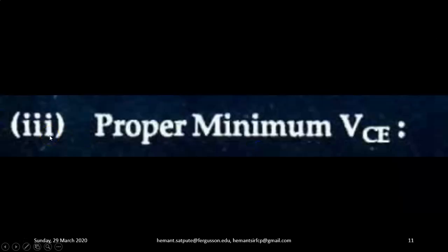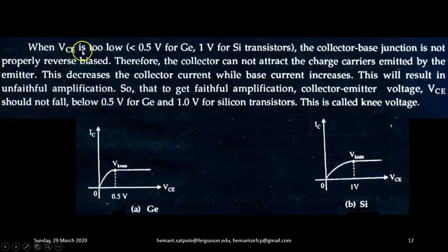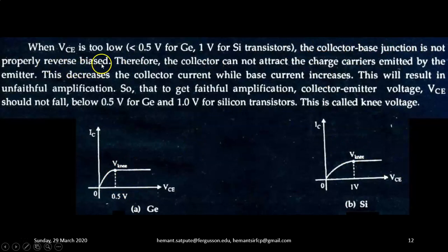Now, let us learn the meaning of the third term: proper minimum value of VCE, collector to emitter voltage. When VCE is too low — less than 0.5 volt for germanium and 1 volt for silicon transistors — the collector-base junction is not properly biased. Therefore, the collector cannot attract the charge carriers emitted by the emitter, which decreases the collector current while the base current increases.